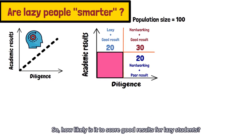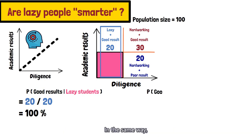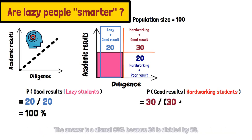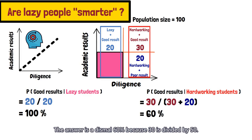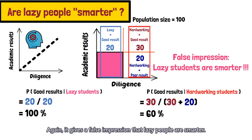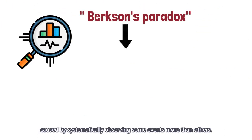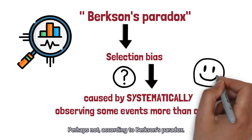So, how likely is it to score good results for lazy students? The answer is 100% because 20 is divided by 20. In the same way, how likely is it to achieve good academic performance for hard-working students? The answer is a dismal 60% because 30 is divided by 50. Again, it gives a false impression that lazy people are smarter. In reality, Berkson's paradox is a particular kind of selection bias, caused by systematically observing some events more than others. So, seeing is believing, isn't it? Perhaps not, according to Berkson's paradox.